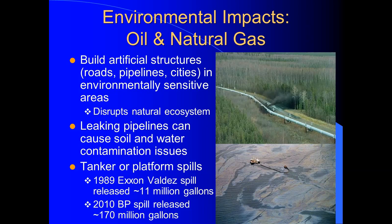Now let's talk about environmental impacts from the extraction and transportation of oil and natural gas. Number one: we build artificial structures — roads, pipelines, cities — in environmentally sensitive areas like tundra and forest regions, disrupting natural ecosystems. The other big source of problems is contamination. A pipeline in Alaska springing a leak creates a plume of oil that contaminates trees, soil, nearby surface water, and even infiltrates down to contaminate groundwater resources.